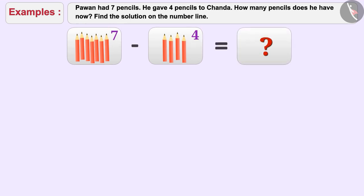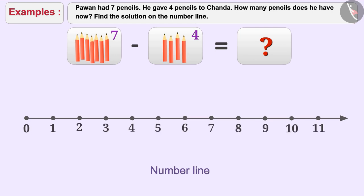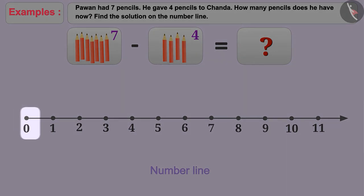Let's express it on the number line. Draw a number line and mark more than seven numbers on it. Since the first number is seven, we will locate seven on the number line.